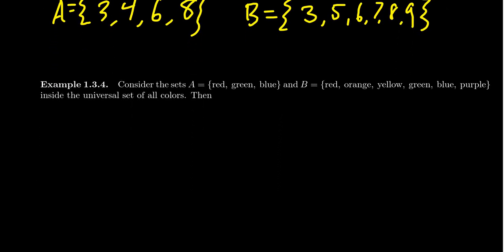Now, we have to have a universe, but sometimes you can get away with the universe not being explicit. Take A to be the set {red, green, blue} and let B be the set {red, orange, yellow, green, blue, purple}. These are both sets whose elements consist of colors, so it would be natural to think the universe would be the set of all colors. There is some ambiguity — are we talking about the six colors of the rainbow? Some people argue there's a seventh one, indigo, mostly just to make an acronym work.